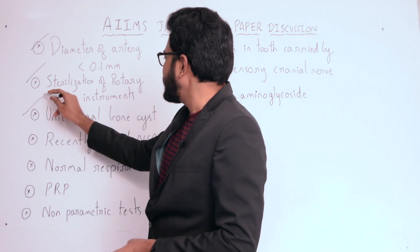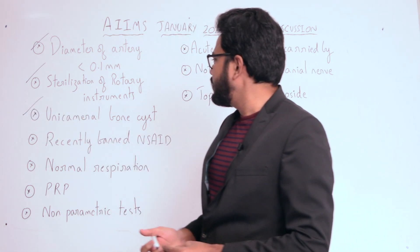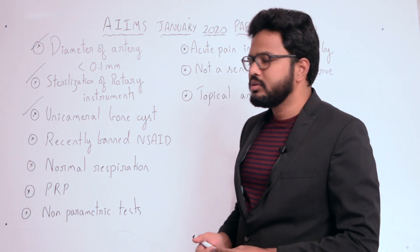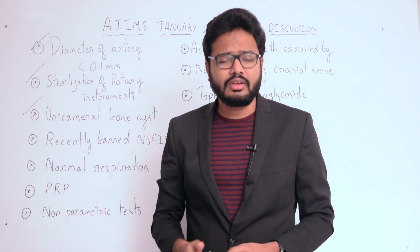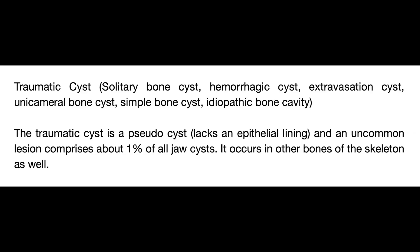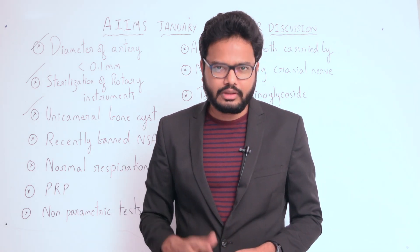The other names for unicameral bone cyst include: traumatic cyst, solitary bone cyst, hemorrhagic cyst, extravasation cyst, simple bone cyst, or idiopathic bone cavity.